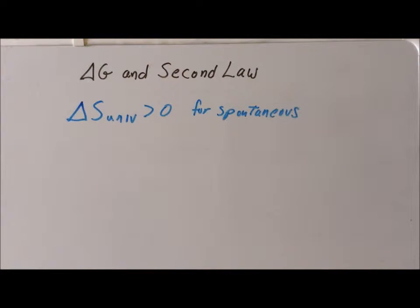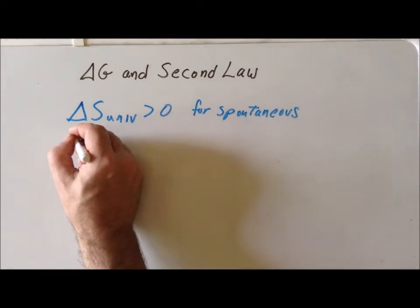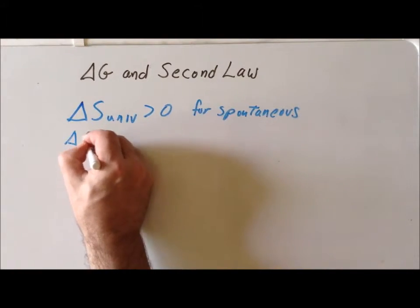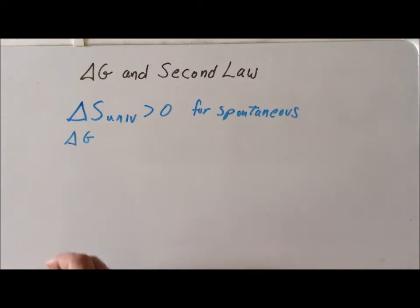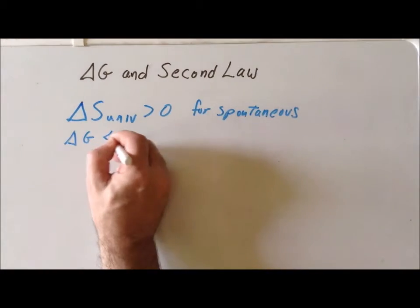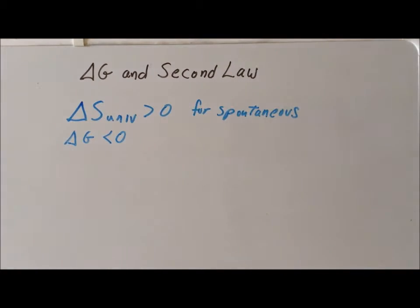Now this becomes very confusing because once you learn about delta G, the condition on delta G for a spontaneous process is that delta G is less than zero for a spontaneous process, which does not seem to make sense when we can compare it with delta S.